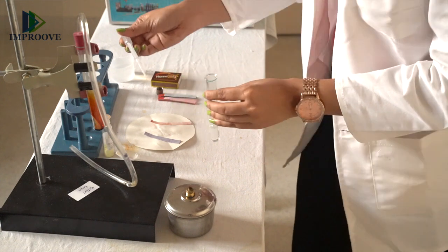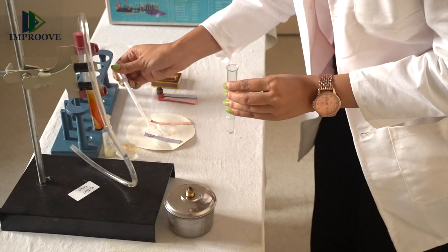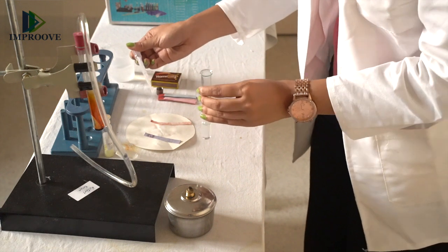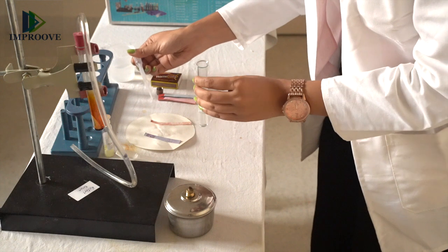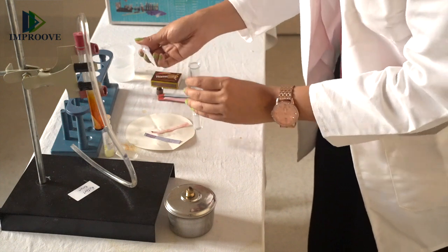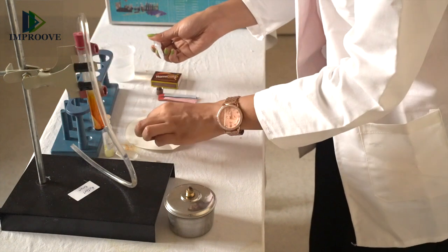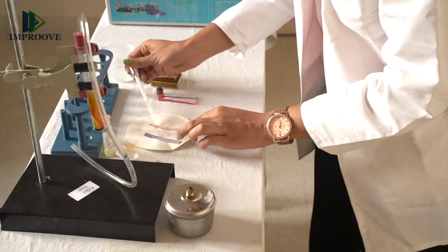Gently place a drop of the solution from the test tube onto the blue litmus paper. Similarly, place a drop on the red litmus paper and note the color changes.